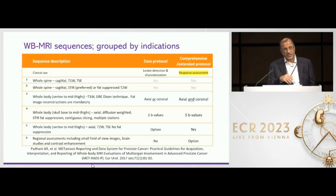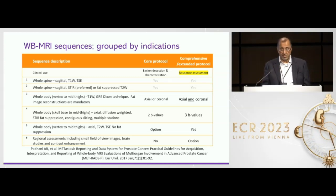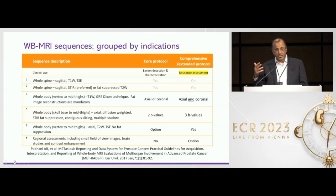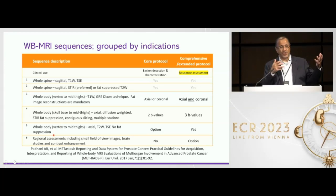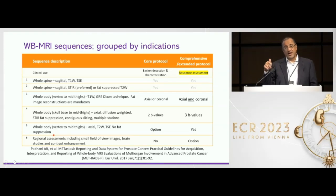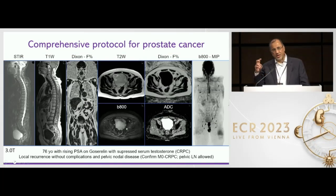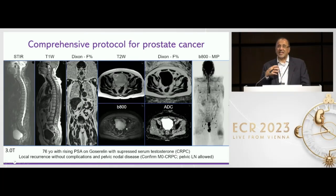There's also a comprehensive protocol, and this consists of additional sequences — for example three B values, a coronal and an axial. We no longer do three B values simply because the SNR of the baseline images is so high nowadays that you don't need to do a middle B value, and you can calculate that retrospectively for lesion detection. This extended protocol takes longer, probably about 45 minutes, because it enables you to do other things.